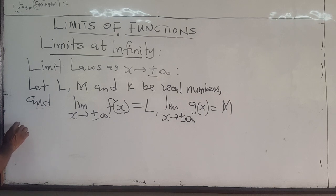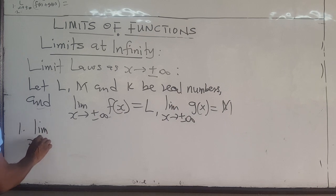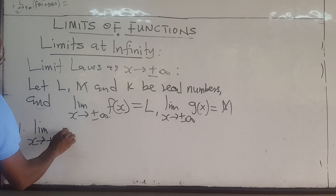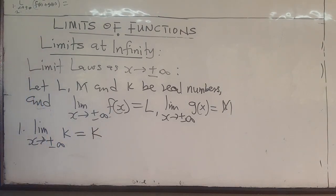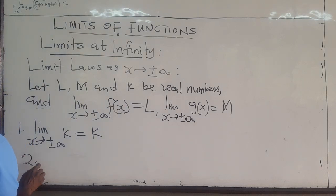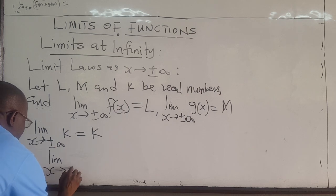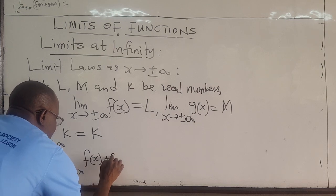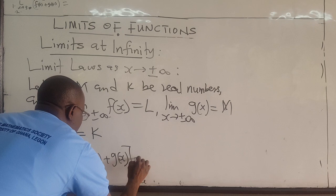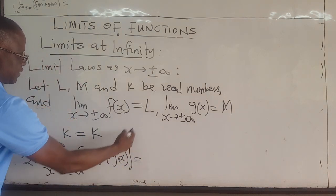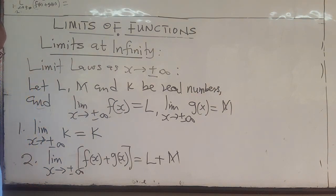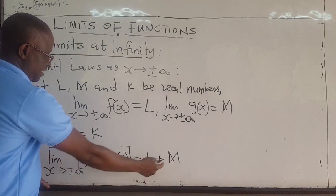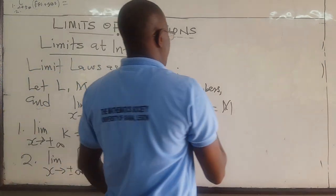Then, just like we did for the other laws: first, the limit as x approaches plus or minus infinity of a constant — if it's a constant, it doesn't matter if x goes to positive or negative infinity, it will still remain a constant. Next, the limit as x approaches plus or minus infinity of the sum of two functions: you can find the limit of f(x), which is L, and the limit of g(x), which is M, so this would be L plus M. You can do the same for the product: the limit as x approaches plus or minus infinity of f(x) times g(x) equals L times M.